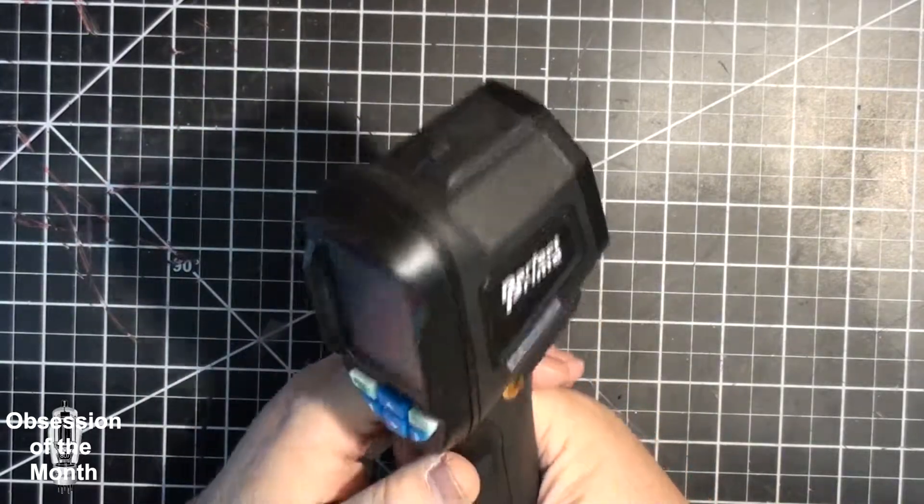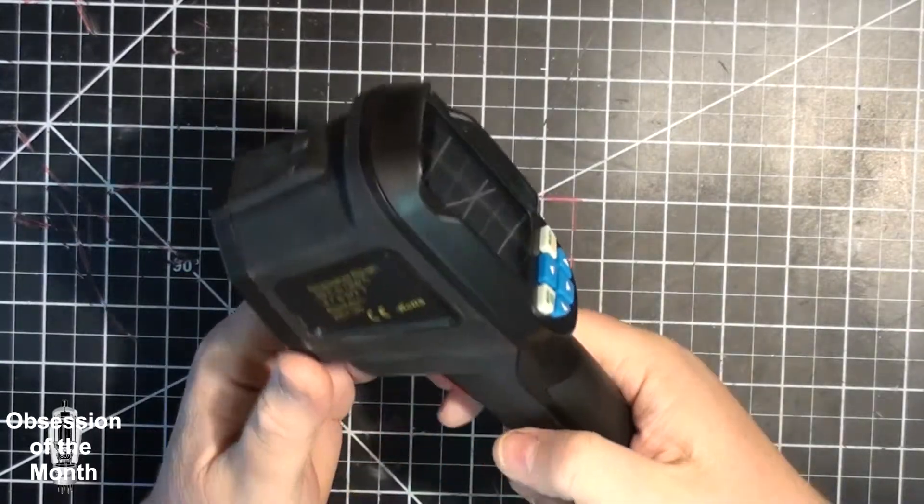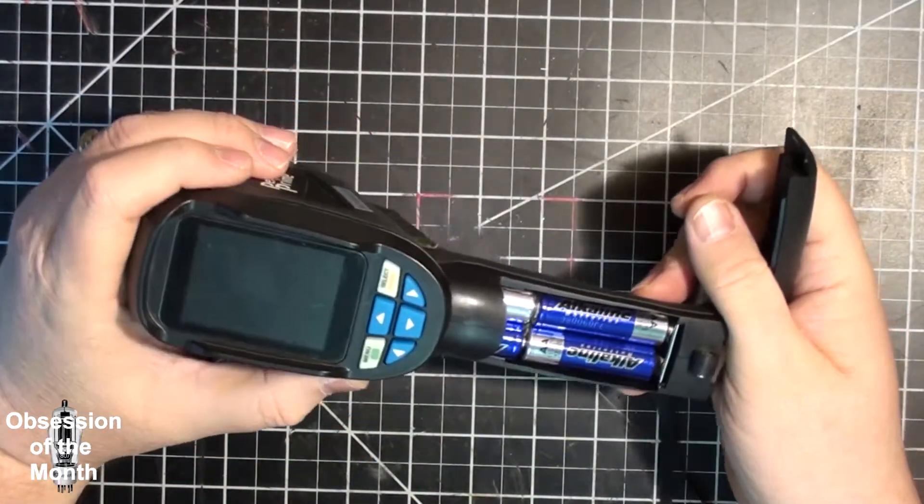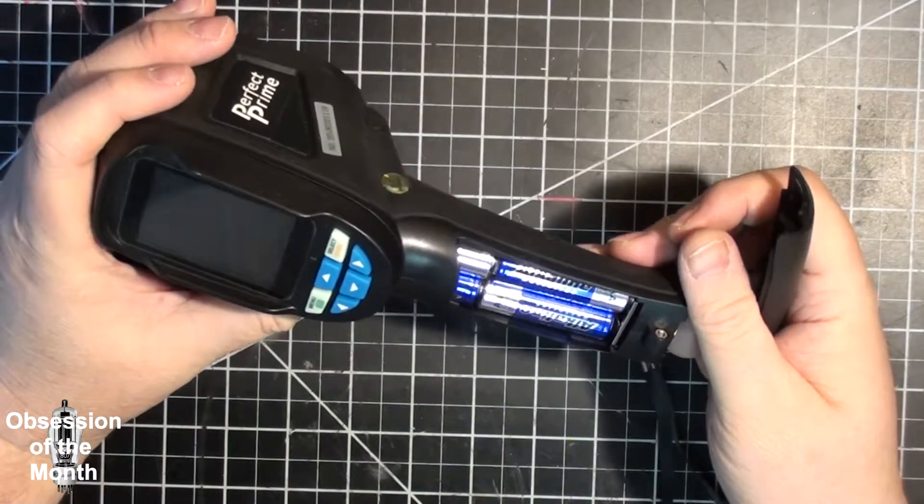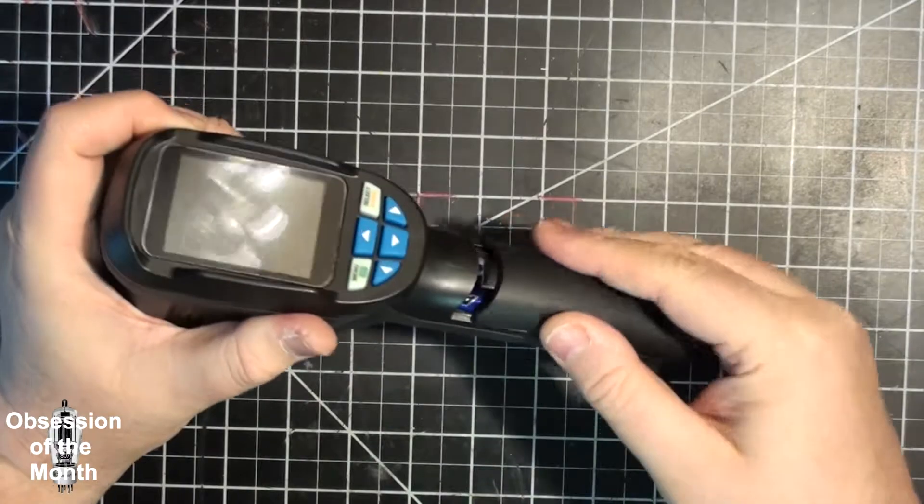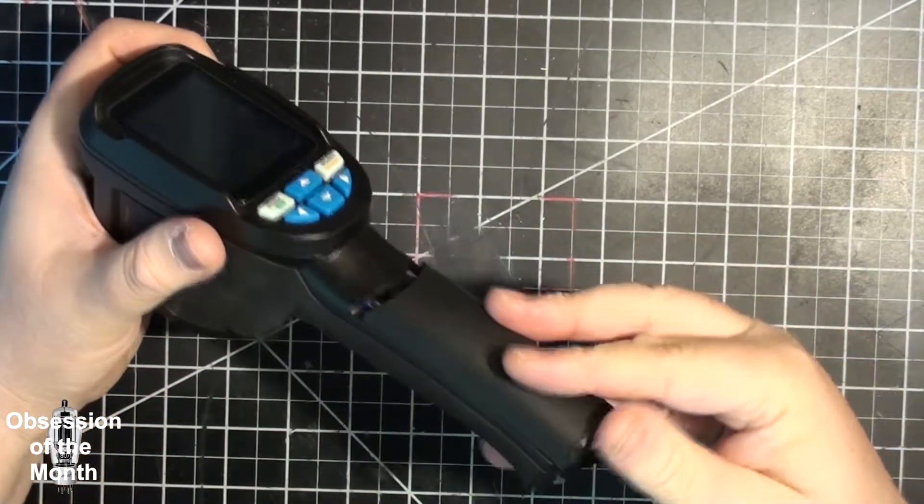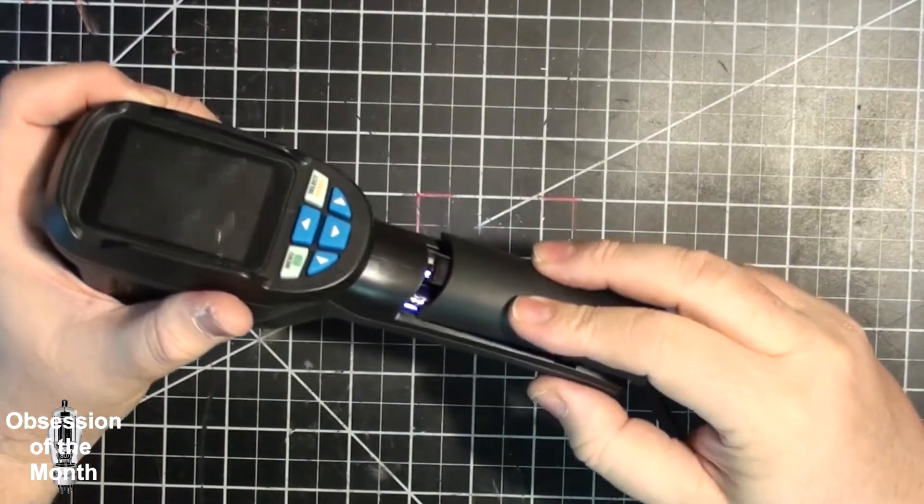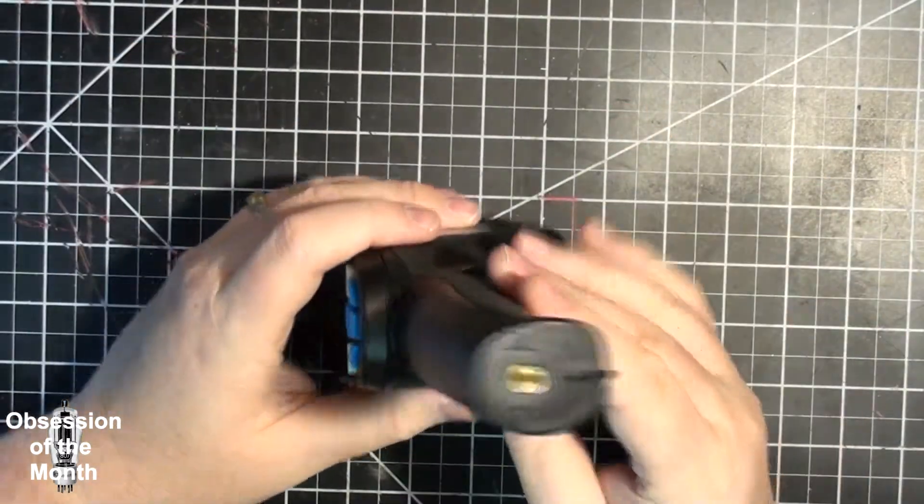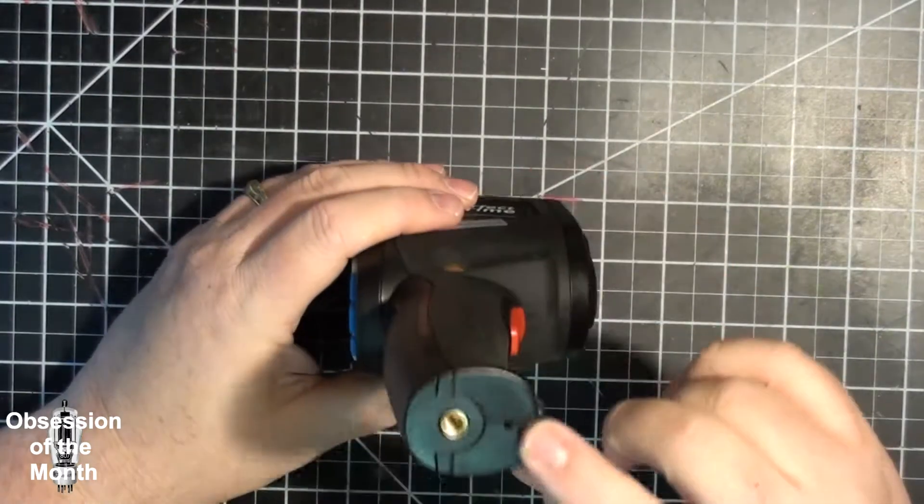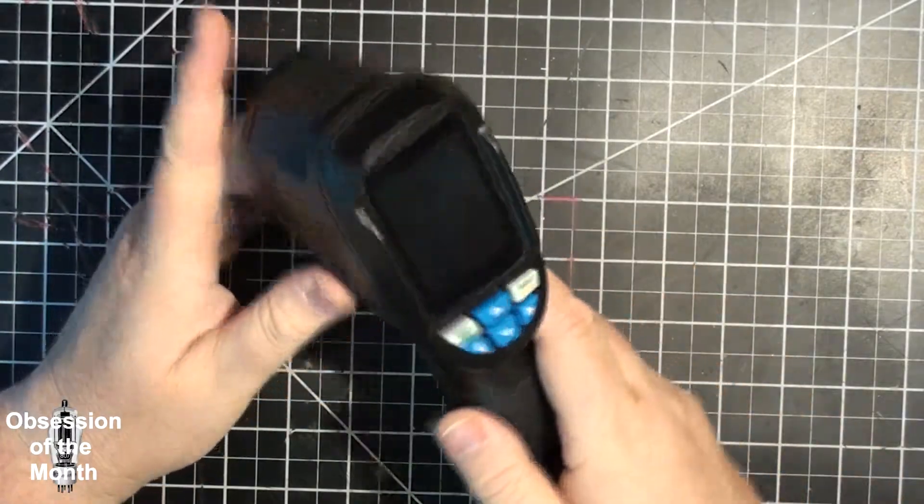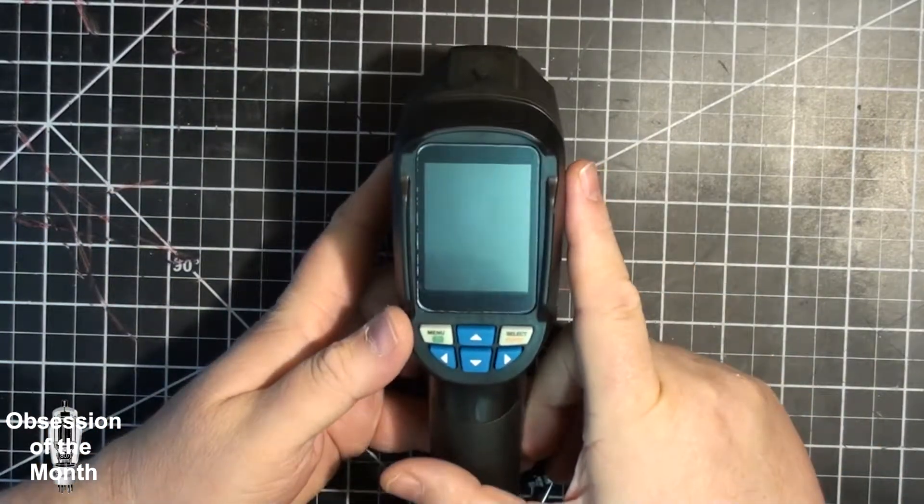This thing does not take video, at least as far as I can tell. This particular model runs off of double-A batteries. I chose the double-A batteries because it's easier to change the batteries and if you wanted you can get rechargeables. On the bottom of it, it has a tripod mount, standard quarter 20 thread.